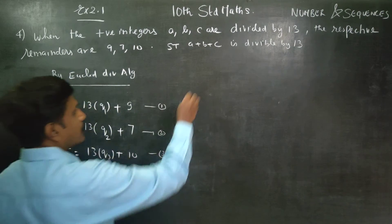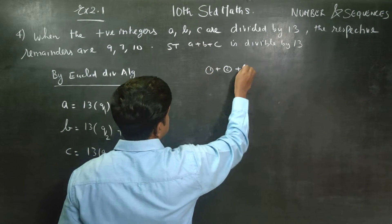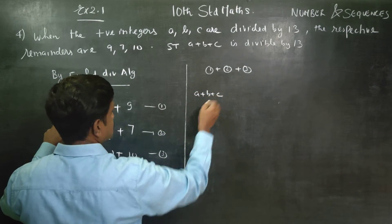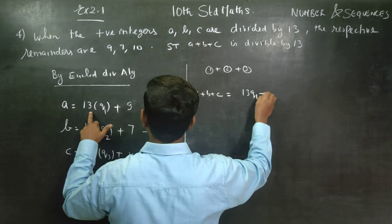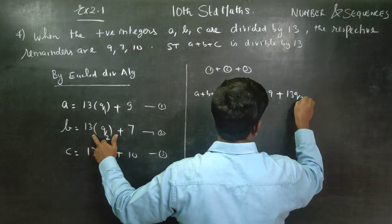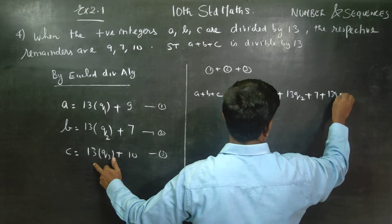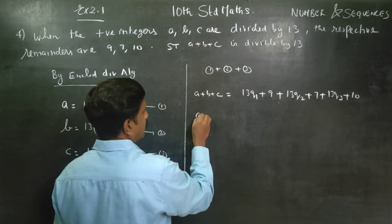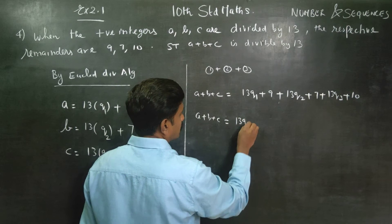Now adding all three equations — equation 1 plus 2 plus 3 — A plus B plus C is equal to 13Q1 plus 9 plus 13Q2 plus 7 plus 13Q3 plus 10. Therefore A plus B plus C equals 13Q1 plus 13Q2 plus 13Q3 plus 26, which is divisible by 13.